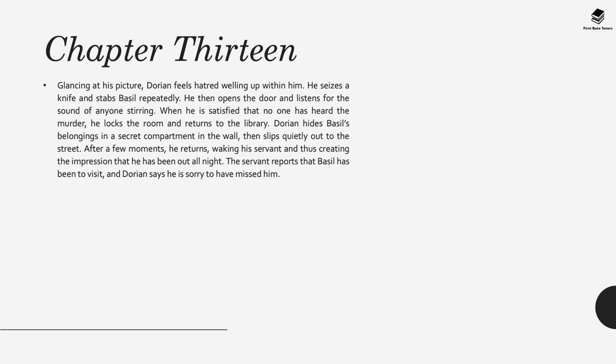Dorian hides Basil's belongings and body in a secret compartment, then slips out quietly. After a few moments he returns home. He wakes his servant and creates the impression that he's been out all night, and the servant reports that Basil has been to visit. Dorian pretends he's sorry to have missed him so that he can have an alibi.